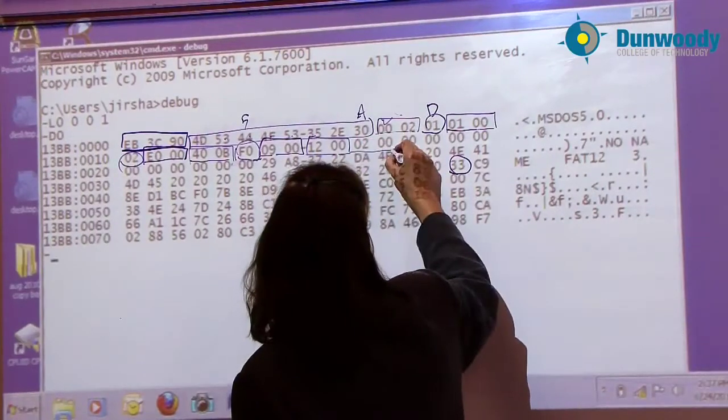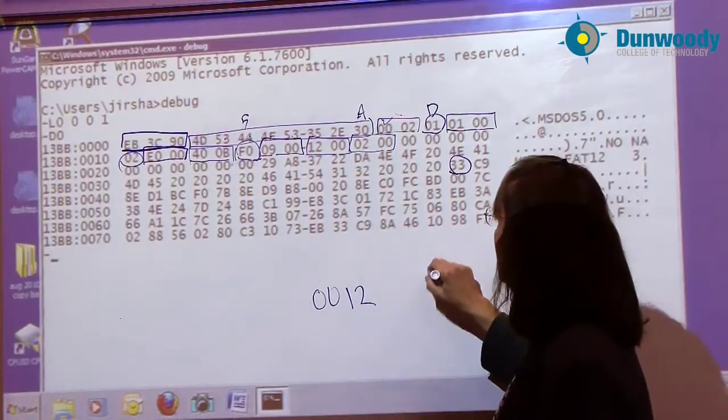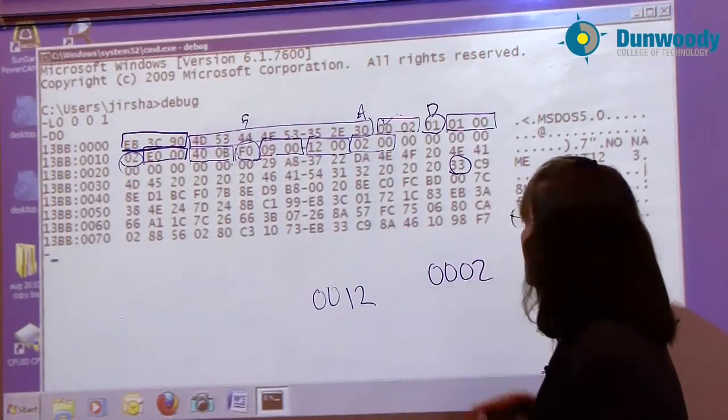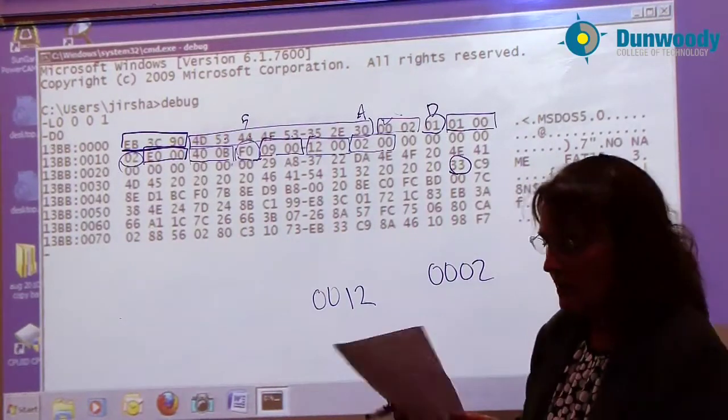The next two bytes over are the number of heads. 0200, reverse the bytes 0002. We have two heads. We only have one platter in a floppy disk, two sides. That would be correct.